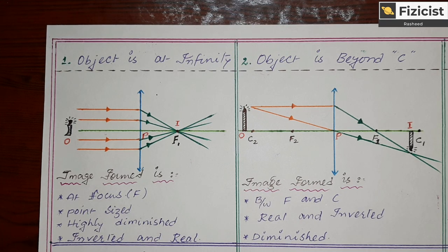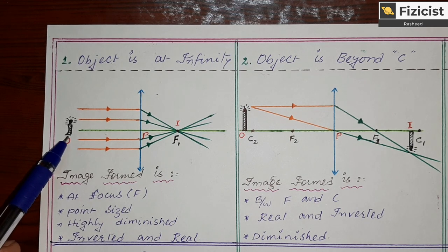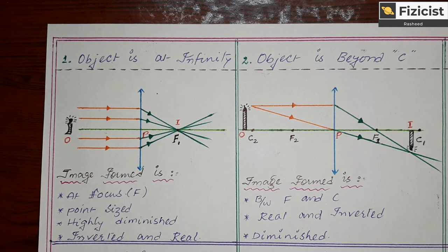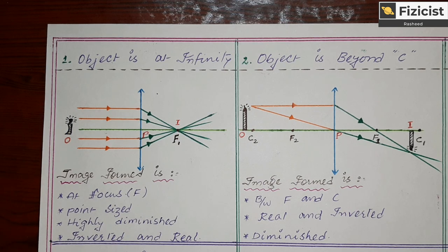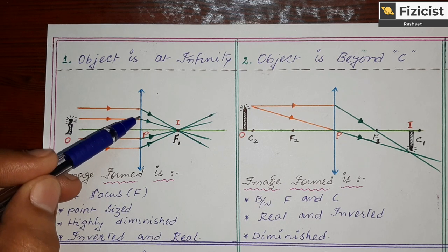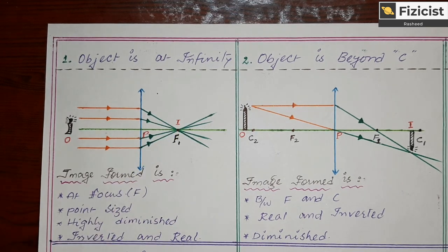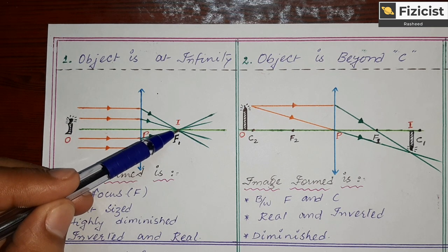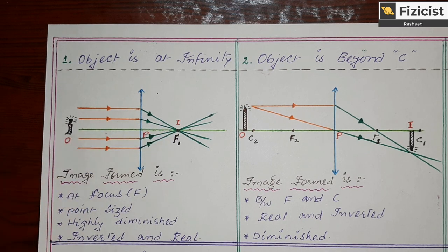In the first position, the object is kept at infinity. When the object is at infinite distance from the biconvex lens, the light rays coming are always parallel to each other and parallel to the principal axis. All the parallel light rays approach the biconvex lens, strike it, refract, and are collected at a single point called the focal point. So the image is formed at the focal point.